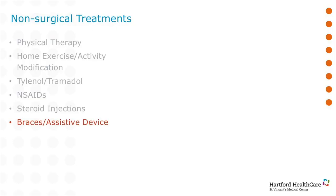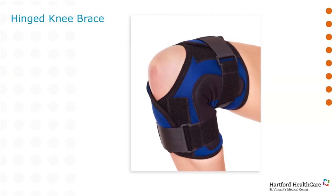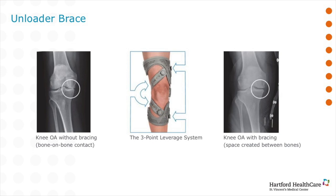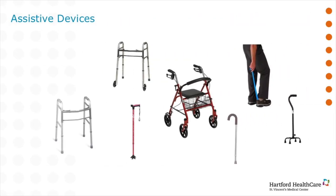Braces are also an option for non-surgical treatment. There are multiple types of braces and assisted devices. A hinged knee brace can be helpful for patients complaining of knee instability or giving way. An unloader brace may be helpful for patients with a large correctable deformity in the frontal plane, either a bow-legged or knock-kneed deformity. This brace takes pressure off of the affected side of the knee and transfers it to the less worn portion of the knee. Assisted devices can include walking aids like canes and a walker, or tools to help facilitate activities of daily living. In general, we do not recommend sacrificing mobility or independent ambulation.